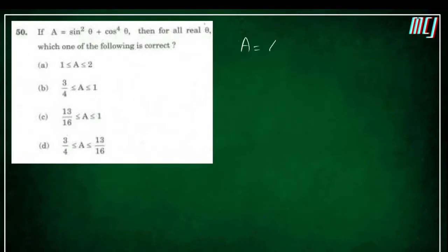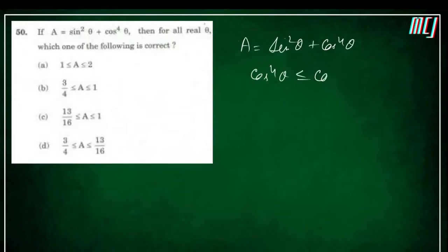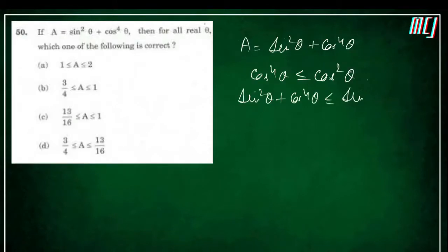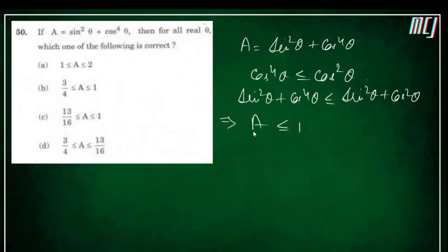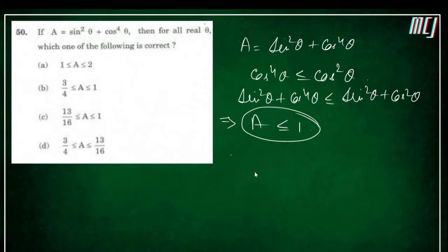Next is an important question: a = sin²θ + cos⁴θ. We know cos⁴θ ≤ cos²θ. Adding sin²θ to both sides: sin²θ + cos⁴θ ≤ sin²θ + cos²θ = 1. So a ≤ 1. Options A and D are eliminated; the answer is B or C.